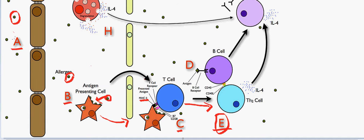To recap: the allergen entered the person's blood, the antigen presenting cells recognized the external product and performed phagocytosis, and a portion of the antigen was presented to both the T-cell and the B-cell. The antigen presenting cells moved toward the lymph node signaling a foreign object. T-cells recognize the MHC2 molecules, proliferate into Th2 cells, and B-cells simultaneously take notice of the new MHC2 molecules.